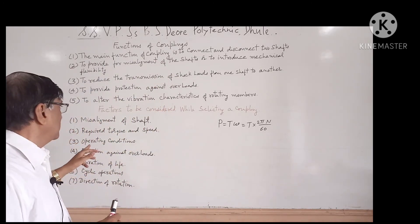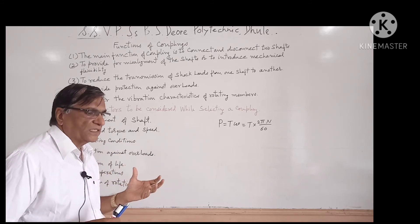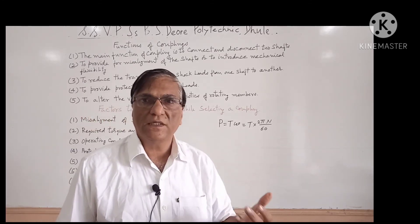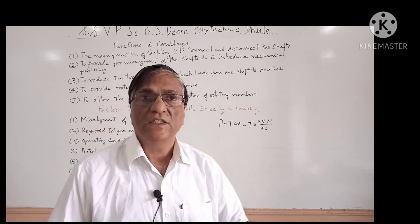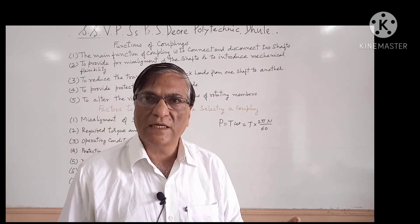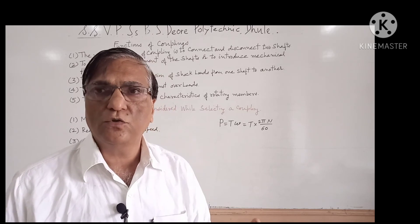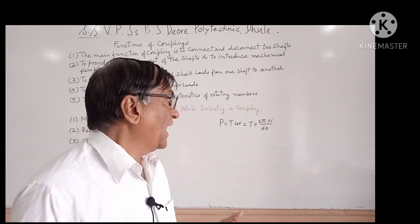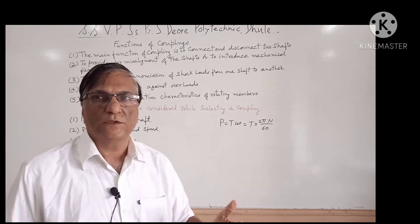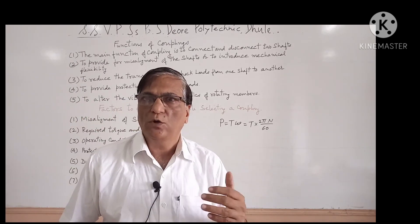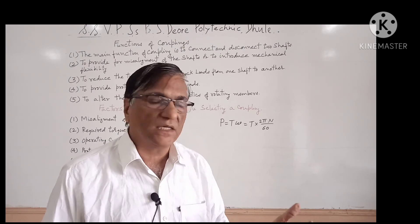Next is required torque and speed. If low torque is to be transmitted, we select a different type of coupling. If high torque is to be transmitted, we select a different type of coupling. Selection also depends upon the torque and angular speed or RPM. At low speed we have a different coupling, and at high speed we have a different coupling.